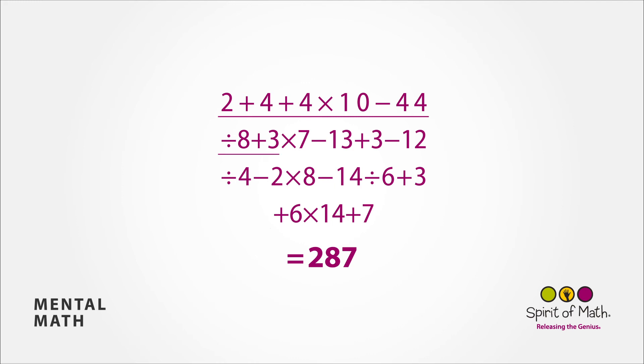adding 3 to that gives you 10, and multiplying it by 7 is 70, subtracting 13 is 57, and adding 3 is 60, subtract 12 is 48, divided by 4 is 12,